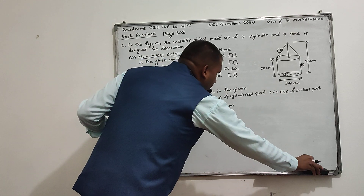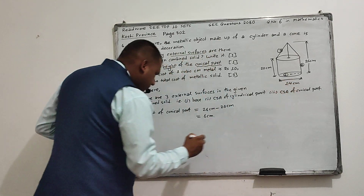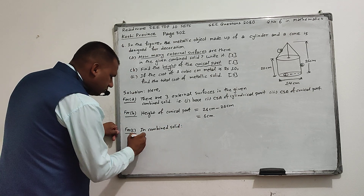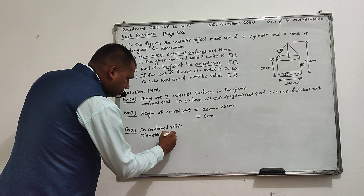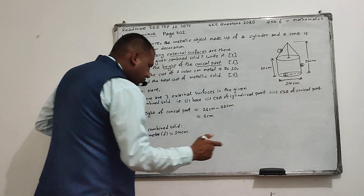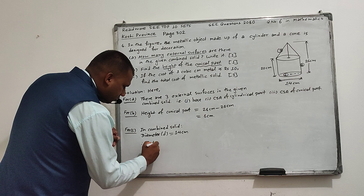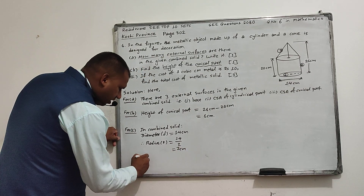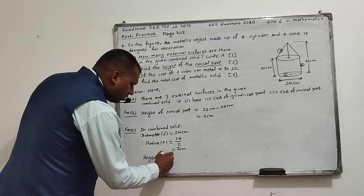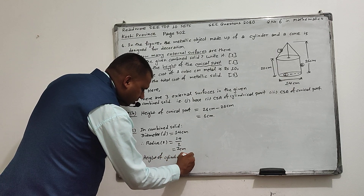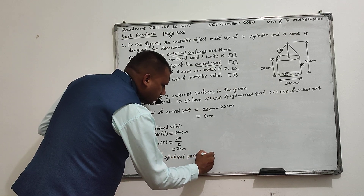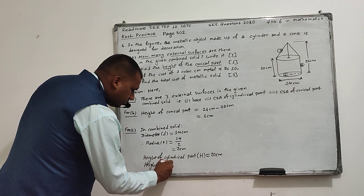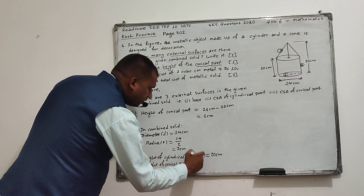The diameter of the combined solid is 14 centimetres. Therefore, radius r equals 14 divided by 2, which equals 7 centimetres. The height of the cylindrical part equals 20 centimetres, and the height of the conical part equals 6 centimetres.